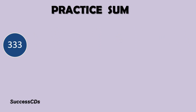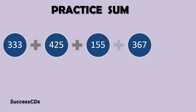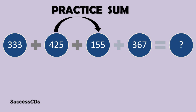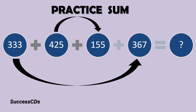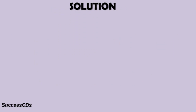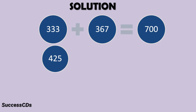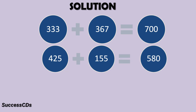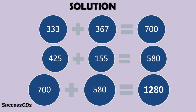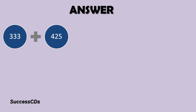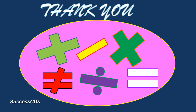Another sum for your practice: 333 plus 425 plus 155 plus 367. You can pair up 425 and 155, and the second pair is 333 plus 367. When you add 333 and 367, the sum is 700. When you add 425 and 155, you get 580. You add both these sums and the answer is 1280. Thank you for watching this and do subscribe to Success CDs Education.